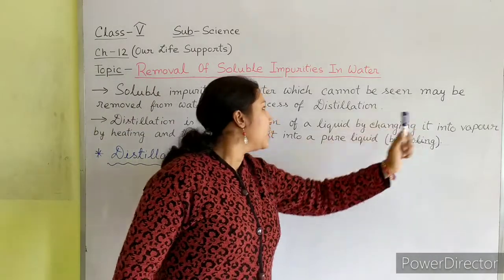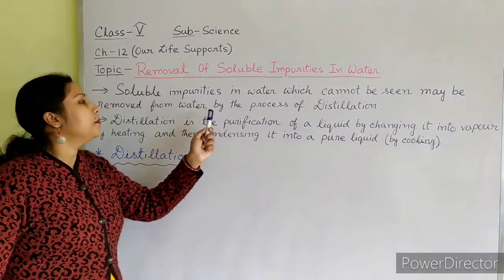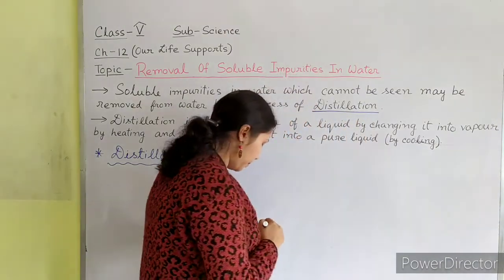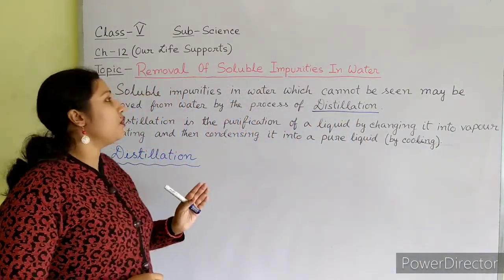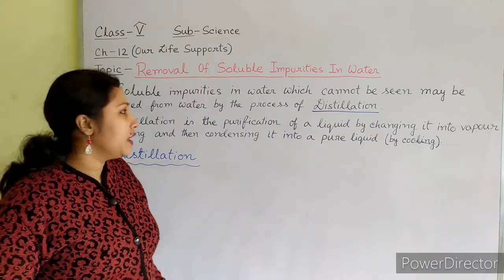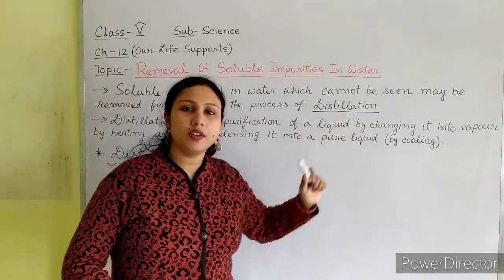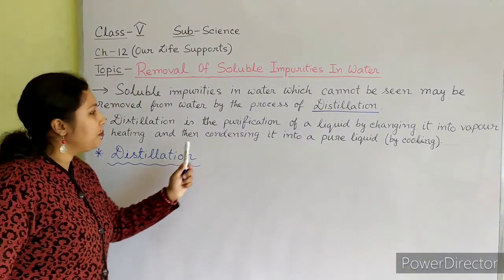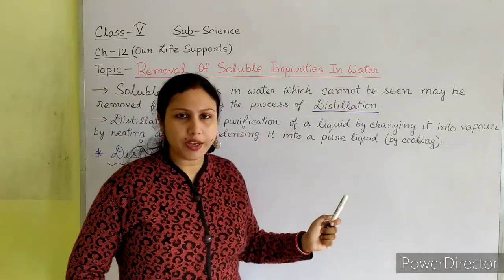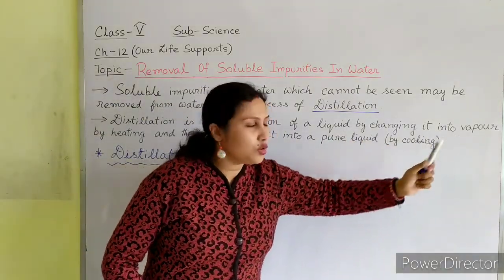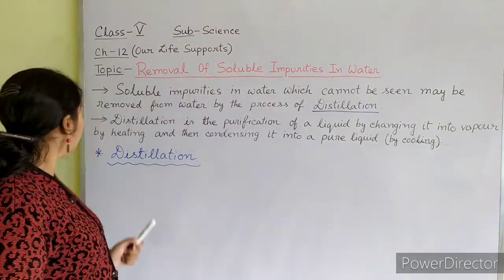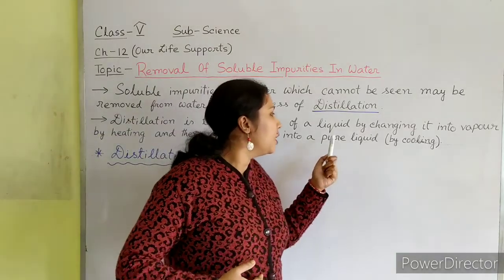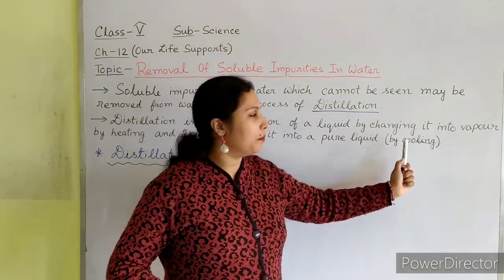Soluble impurities may be removed from water by the process of distillation. Distillation is the purification of a liquid by changing it into vapour by heating and then condensing it into a pure liquid by cooling.